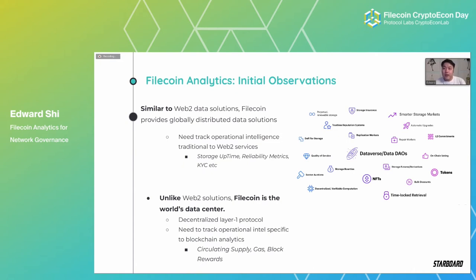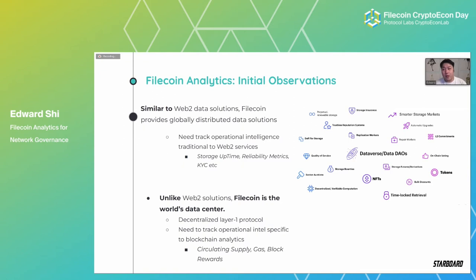We also need a very clear KYC — things like who are the top agencies making the most interactions on the network. On the other hand, unlike Web2 solutions, Filecoin is the world's data center — a decentralized layer-one protocol trying to democratize storage provision and data economy services to all participants. This means we also need to track blockchain-specific analytics: metrics like circulating supply, gas, and block rewards — concepts native to the blockchain ecosystem not traditionally available in Web2 services.